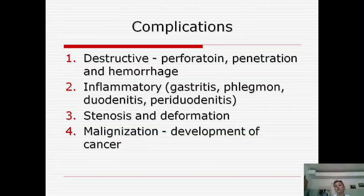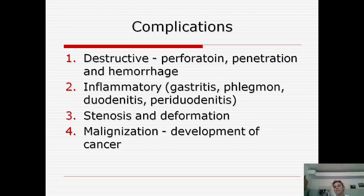There are four groups of complications of peptic ulcer. The first group is destructive complications, which occur during the acute phase: growth of the ulcer can result in perforation with peritonitis, or penetration — meaning the ulcer grows into organs surrounding the stomach and duodenum. For example, penetration into the pancreas can cause pancreatic necrosis — a very aggressive complication with serious outcomes.